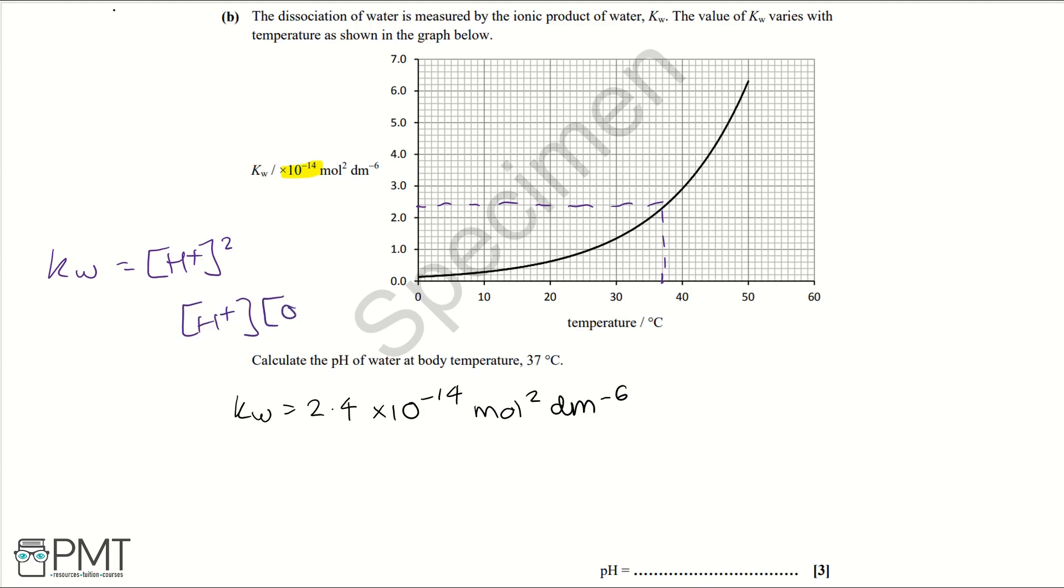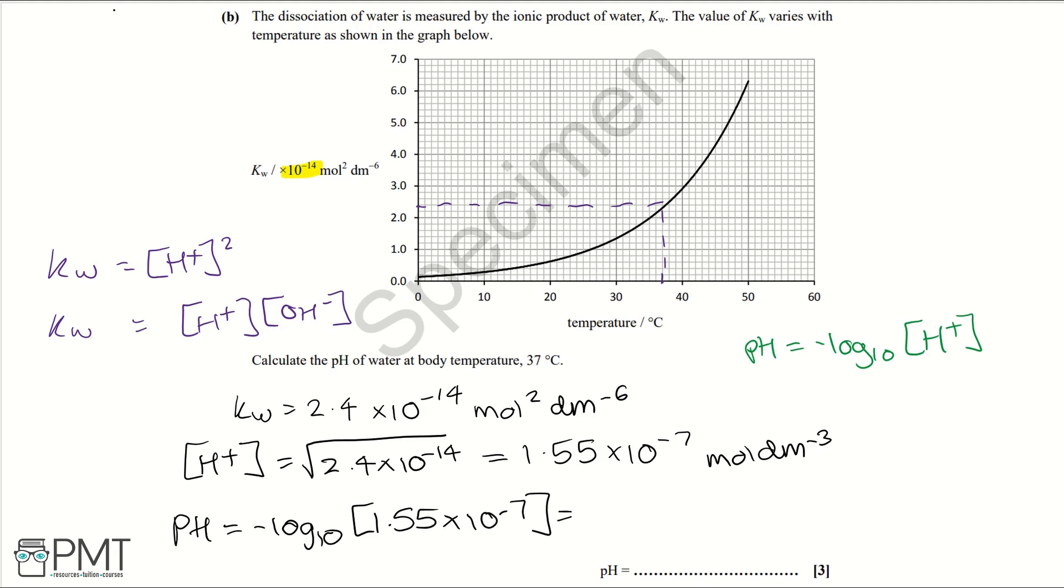So if we want to find [H⁺], we would need to square root Kw, which is 2.4 times 10⁻¹⁴, and that equals 1.55 times 10⁻⁷ mol dm⁻³. Then using the equation pH equals -log₁₀[H⁺], we can find the pH of water at body temperature. So that would be pH equals -log₁₀(1.55 times 10⁻⁷).